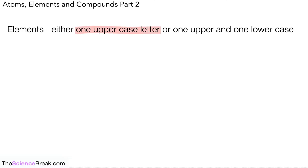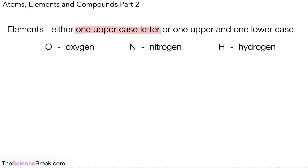When writing elements as symbols, there are two ways depending on the element: either one uppercase letter, or one uppercase and one lowercase letter. Examples of just one uppercase letter are oxygen (O), nitrogen (N), and hydrogen (H).